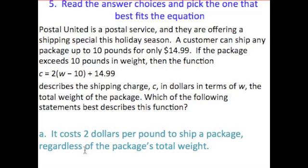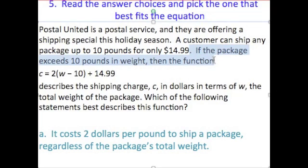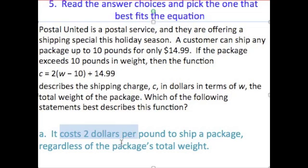Let's read through the multiple choices. Choice A: it costs $2 per pound to ship a package regardless of the package's total weight. Is that true? The charge equals 2 times the weight of the package minus 10, plus $14.99. No, that can't be true, because this function only works if the package exceeds 10 pounds in weight. If the package weighed 8 or 9 pounds, it's not going to cost $2 per pound to ship — a customer can ship any package up to 10 pounds for $14.99.